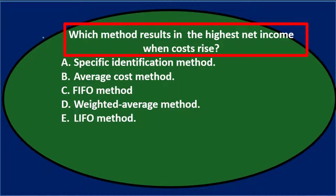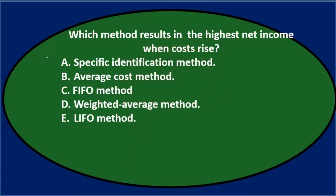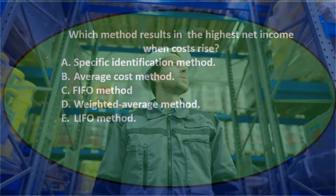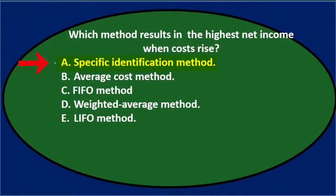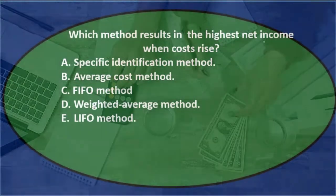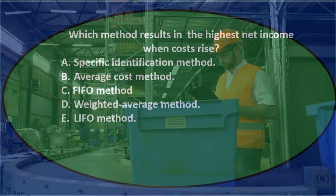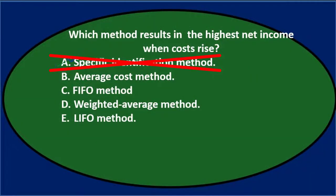Which method results in the highest net income when costs rise? A, Specific Identification — that means we know exactly which item of inventory is being sold, so we don't really have control over the flow. We wouldn't really know if that would have a positive or negative income impact. Specific identification is usually used for large, unique inventory items. So I don't think it's going to be specific identification.